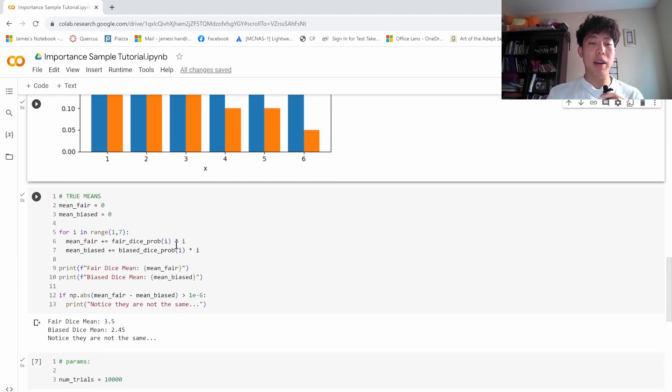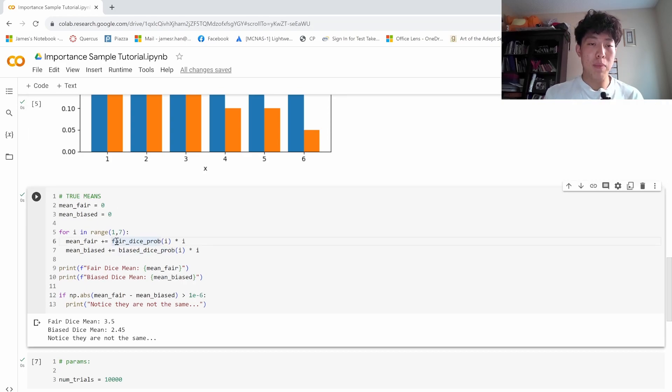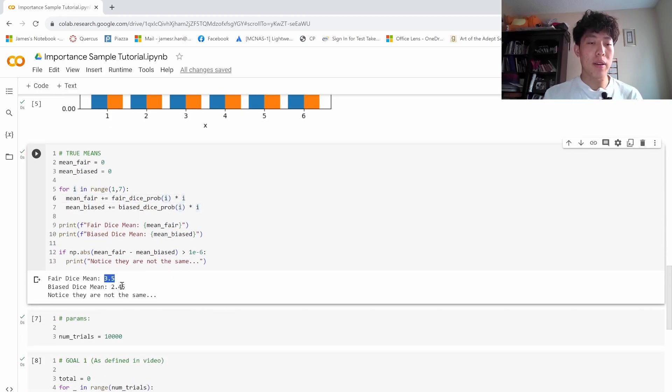And using this, we can calculate what the expected value or what the mean is. So here we have the probability of event x happening, multiplying by what event x is. And doing this, we can see that the fair dice has a mean of 3.5, and the biased dice has a mean of 2.45.